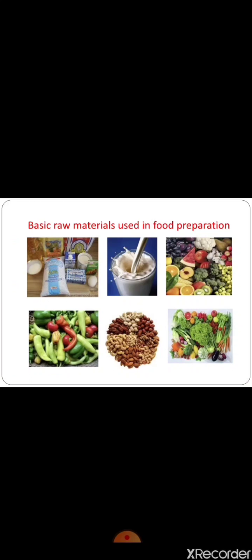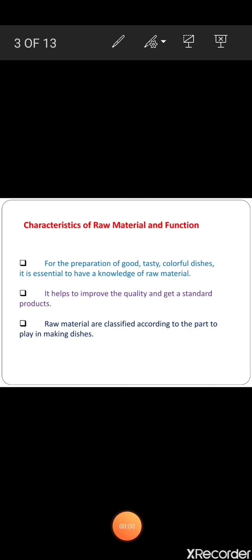Basic raw material used in food preparations. First we see the characteristics of raw material and function. For the preparation of good, tasty, colorful dishes, it is essential to have a basic knowledge of raw materials.